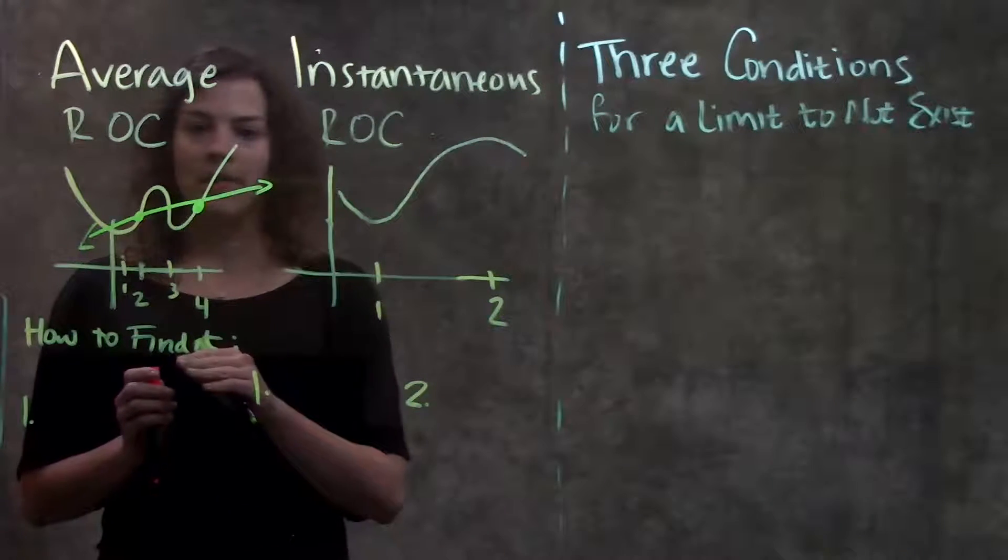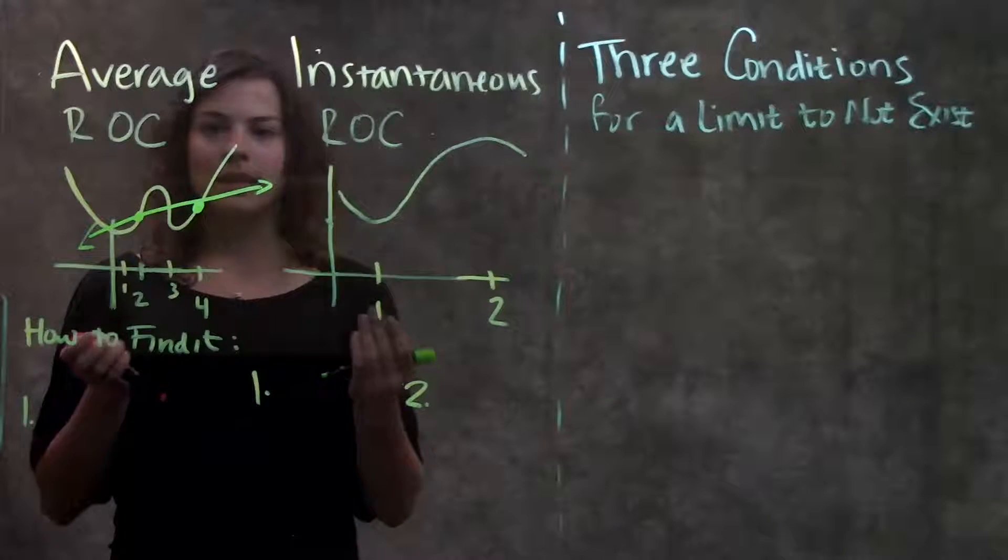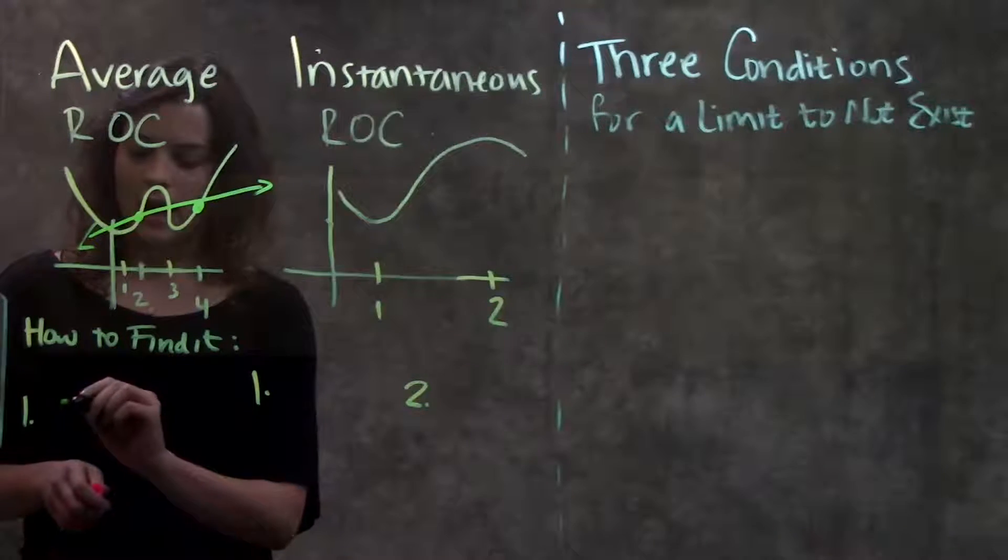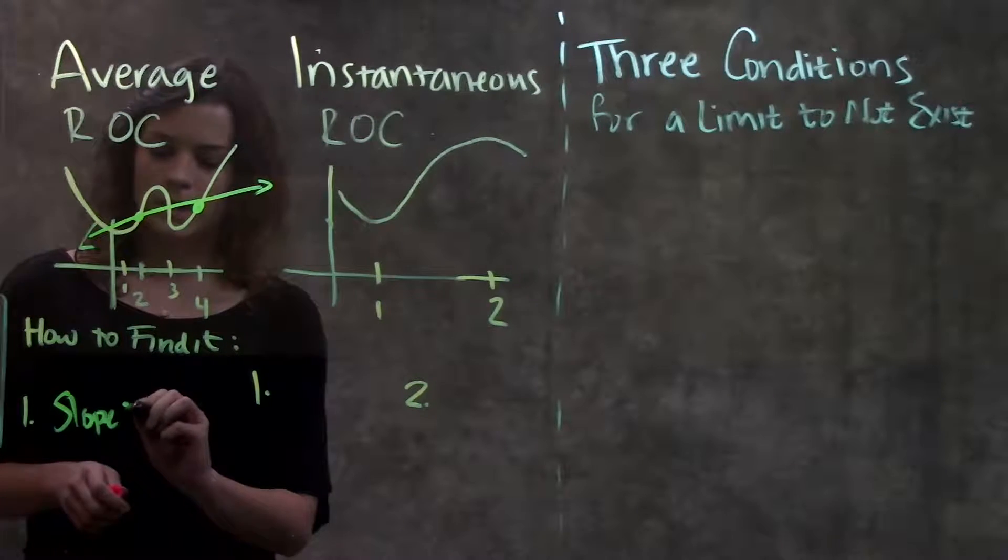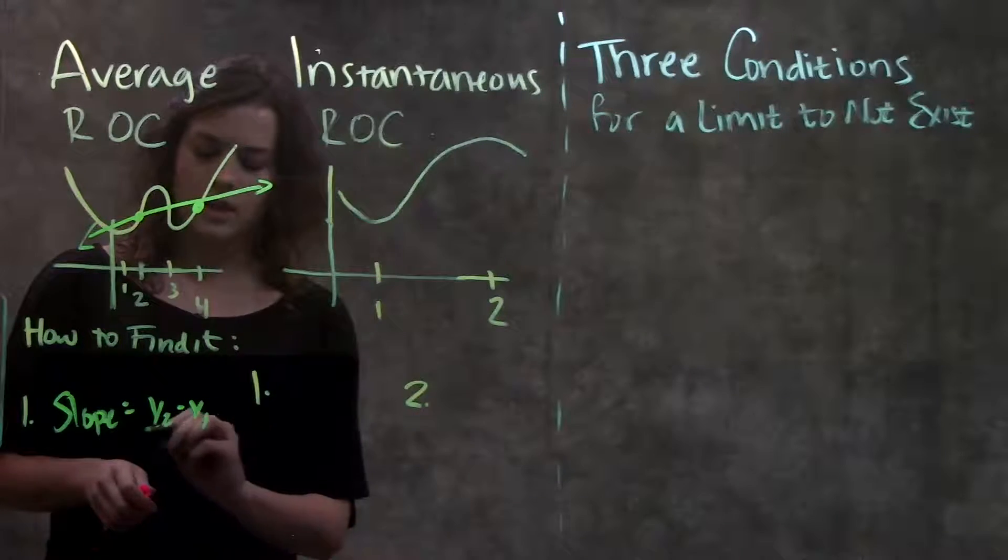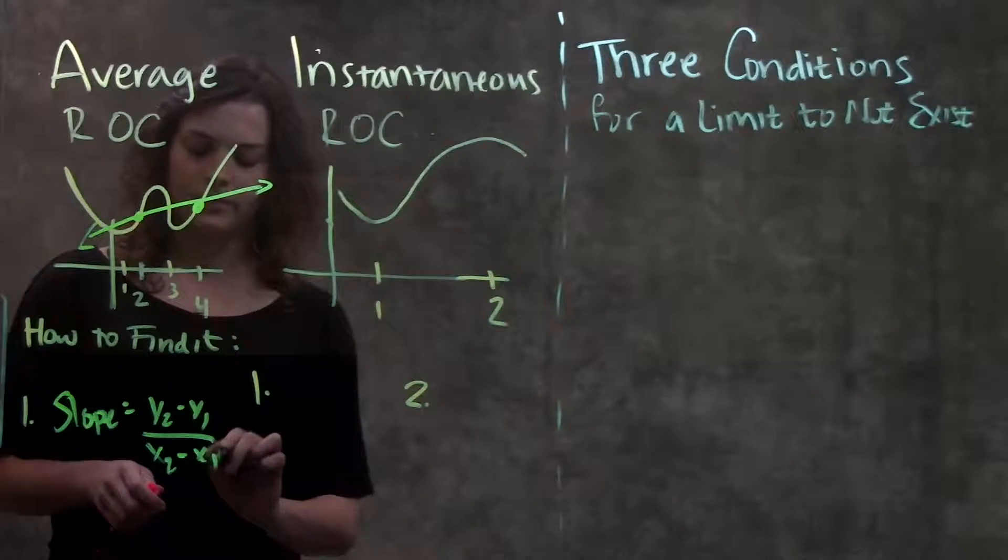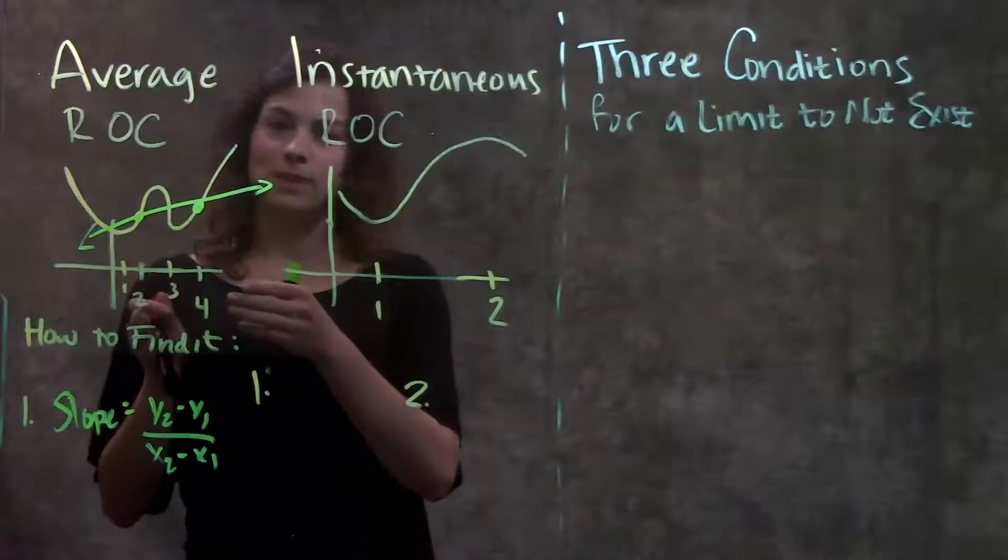How we find the value of the slope of this line is just the same slope formula we've been using. The slope formula is just difference in the y's over difference in the x's. That will give you the average rate of change between these two points.